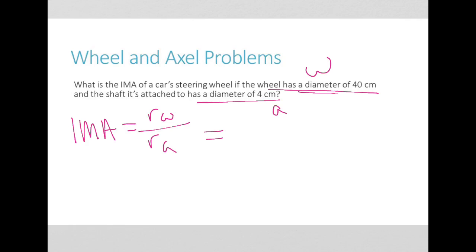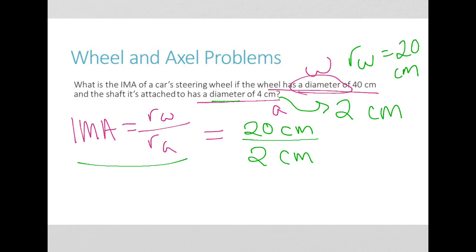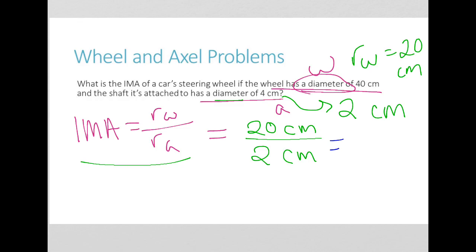Now, this is in diameter, so that means I have to divide everything by 2. So the radius of my wheel is actually 20 centimeters, and the radius of my axle is actually 2 centimeters. I want to make sure that I'm using radius here because that's what my equation asks for. So I have 20 centimeters for my radius and 2 centimeters as the radius of my axle. Therefore, I get an IMA of 10.